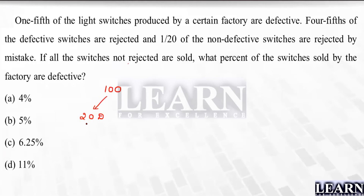Four-fifths of the defective switches are rejected. So four by five of 20 is nothing but 16 — 16 defective switches are rejected. Now, one by twenty of the non-defective switches are rejected by mistake.